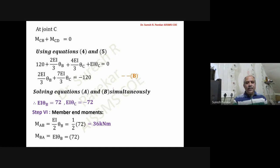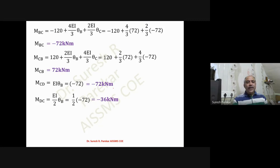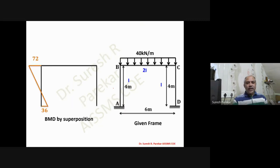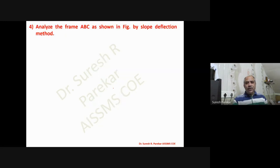The final moments are: M_AB = 36, M_BA = 72 kN·m, M_BC = -72 kN·m, M_CB = -72 kN·m, M_CD = -72, and M_DC = -36 kN·m. These are plotted on the BMD: clockwise moments at A and B (36 and 72), values of 72 for BC and CB, anti-clockwise at C and D. The simply supported moment for BC is wL²/8 = 180 kN·m.